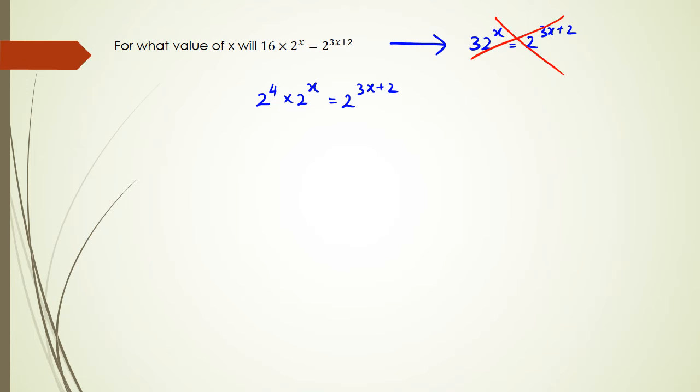So from here, we know that when we multiply two numbers with the same basis, the powers get added. So we're going to get 2 to the power of 4 plus x equals 2 to the power of 3x plus 2.